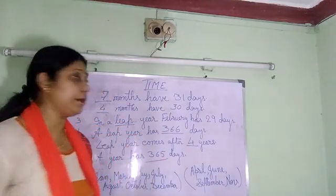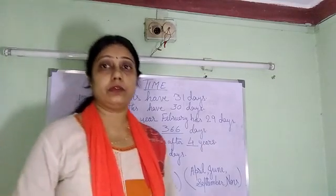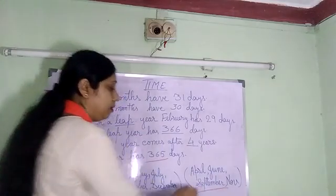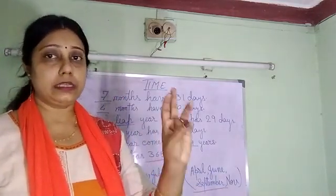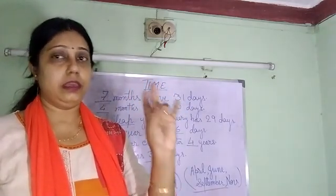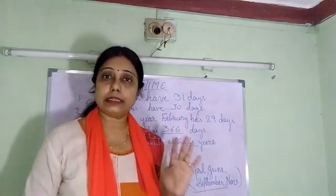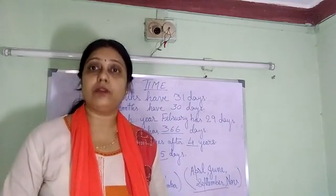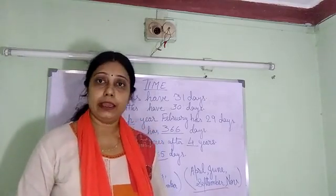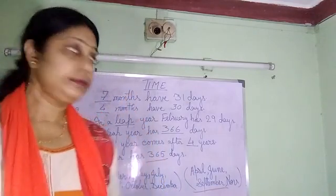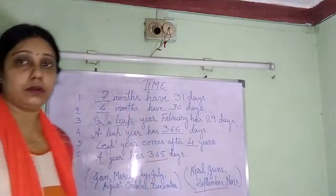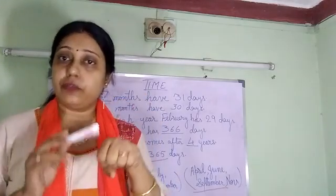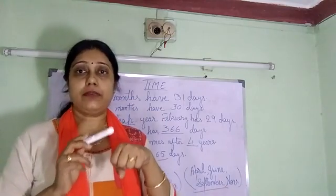Now, if I ask you to name the month having the longest spelling — which month has the longest spelling? It is September. Count: S, E, P, T, E, M, B, E, R — September has 9 letters. So the longest name of a month is September. And the smallest one is May: M, A, Y — only 3 letters. You should memorize these points as they are very important for your exam. Practice counting the months on your fist to easily identify how many days each month has.